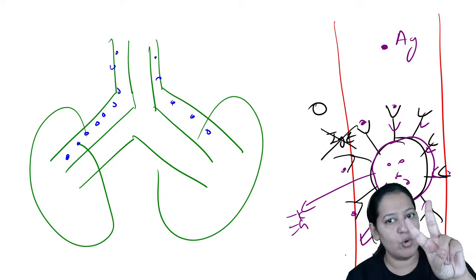For treatment, there is only one category: bronchodilators, of three types. Beta-2 agonists (beta-2 sympathomimetics), anticholinergics (M3 antagonists), and methylxanthines. Beta-2 agonists include salbutamol, terbutaline, bambuterol, salmeterol. Methylxanthines include theophylline, aminophylline, choline theophylline, doxyphylline. Anticholinergics include ipratropium and tiotropium. First I will teach bronchodilators, then prophylaxis drugs.